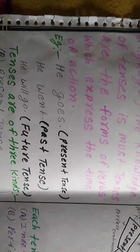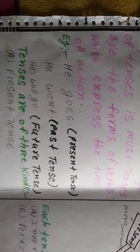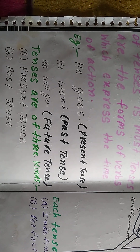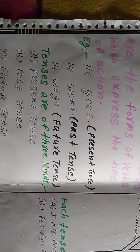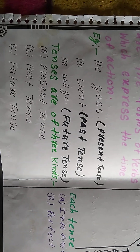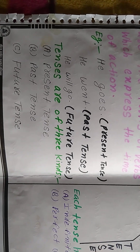Time and action: 'He goes' — present tense. 'He went' — past tense. 'He will go' — future tense. Tenses are of three kinds: present tense, past tense, and future tense.